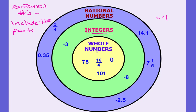Remember: whole numbers are also considered integers and rational numbers. Integers are also considered rational numbers. But not all integers are whole numbers — if they're negative whole numbers, then they can't be classified as a whole number; they're just integers.